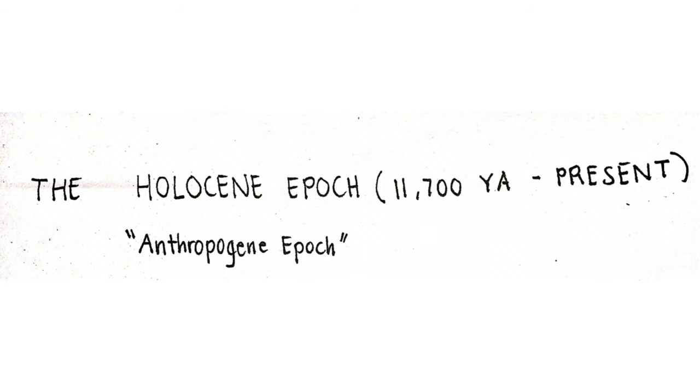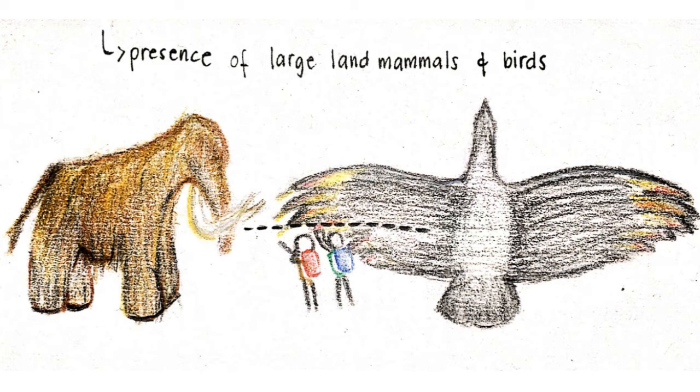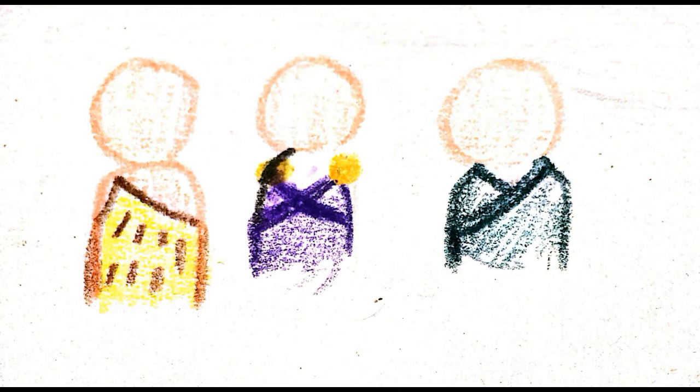As Earth entered a warming trend, the glaciers of the late Paleolithic retreated. Tundra gave way to forests. As the climate changed, the very large mammals that had adapted to extreme cold, like mammoth and woolly rhinoceros, became extinct. Humans, once dependent on these mega-mammals for much of their food, switched to smaller game and increased their gathering of plant materials to supplement their diet.